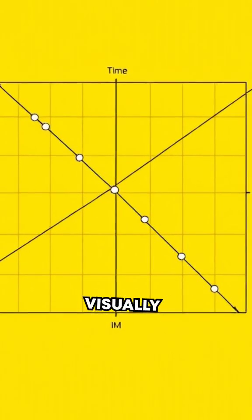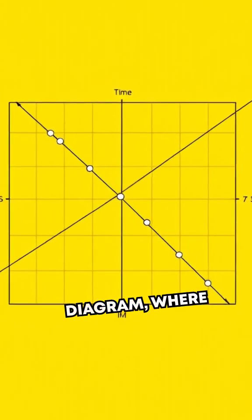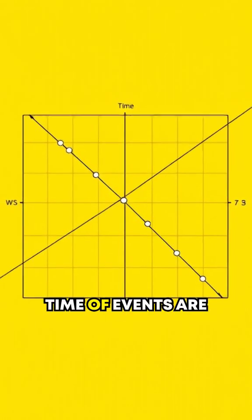This idea is visually represented by what's called a spacetime diagram, where the position and time of events are plotted.